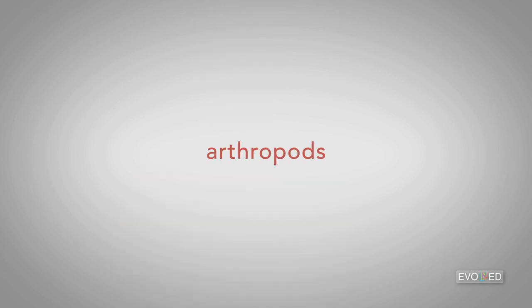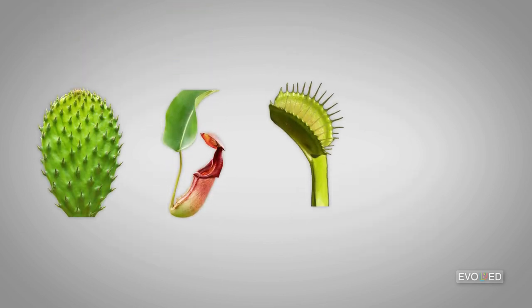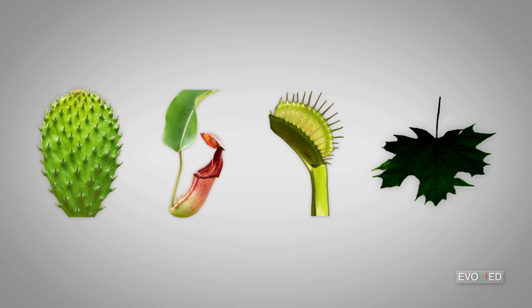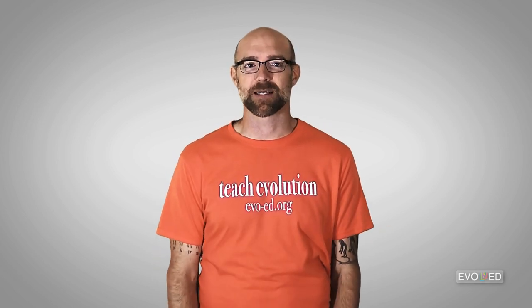Other homologies include things like the way that bodies are segmented in arthropods, arthropods being things like insects and mollusks, or the basic leaf structure across different types of plants, which at first glance can look quite different. Homologous features support the fact that groups of species share a common ancestor.